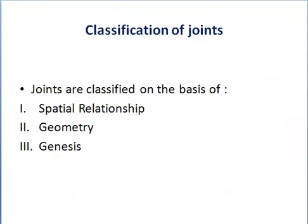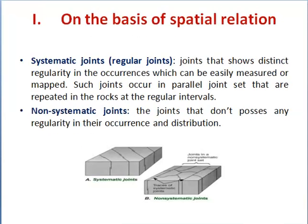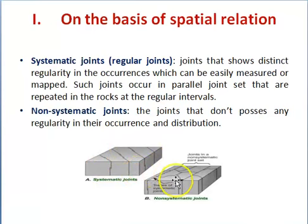Now, classification of joints: joints are classified on the basis of spatial relationship, geometry, and genesis. On the basis of spatial relationship, joints are classified into two types: systematic joints and non-systematic joints. Systematic joints, also called regular joints, show distinct regularity in occurrence and can easily be measured or mapped — they occur in parallel joint sets repeated in blocks at regular intervals. Non-systematic joints do not possess any regularity in their occurrence and distribution, and are developed irregularly in the rocks.